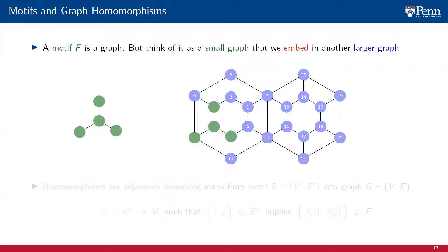This motif can be embedded into the larger graph as shown on the right. It is important to observe that the motif can be embedded into the graph in multiple ways — for example, this is another place where the star motif can be embedded, and this is another, and this is another. There are many other ways in which we can embed the star motif into this graph.